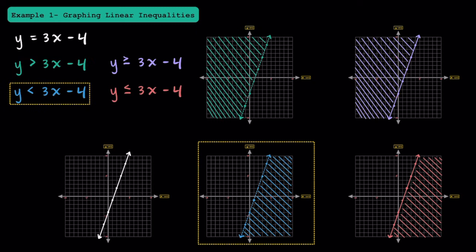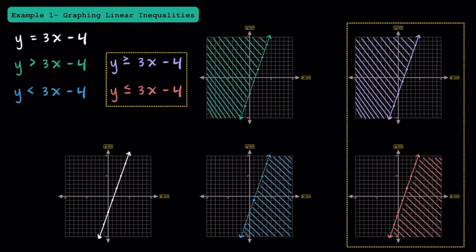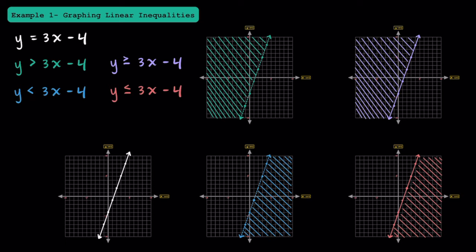Now let's take a look at this one. The only difference between this one and the one we just did was that the inequality is less than instead of greater than. If we try out the point (0, 0) and plug it into our linear inequality, we're going to get a false statement, which is why we know we shade to the other side. If you understand how the less than and greater than linear inequalities work, then the less than or equal to and greater than or equal to ones are pretty much the same. The only difference is that we're going to have solid lines instead of dashed lines.